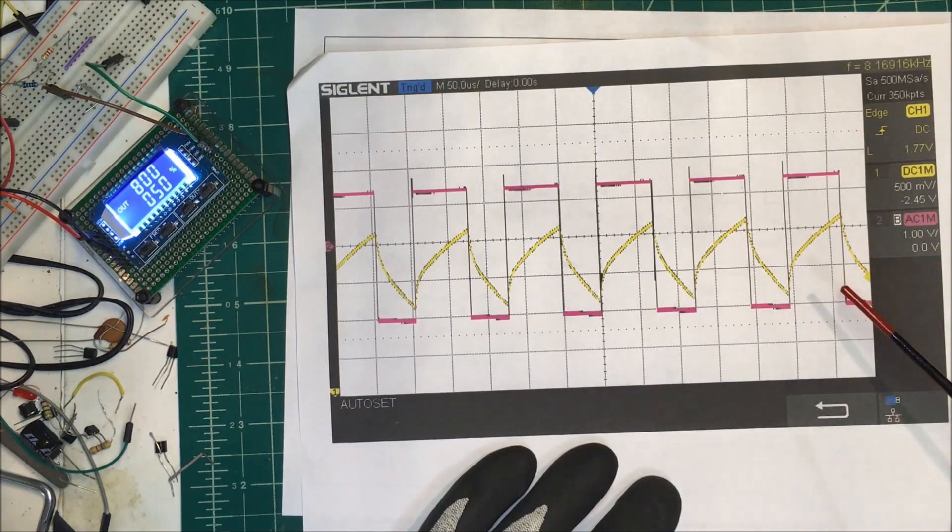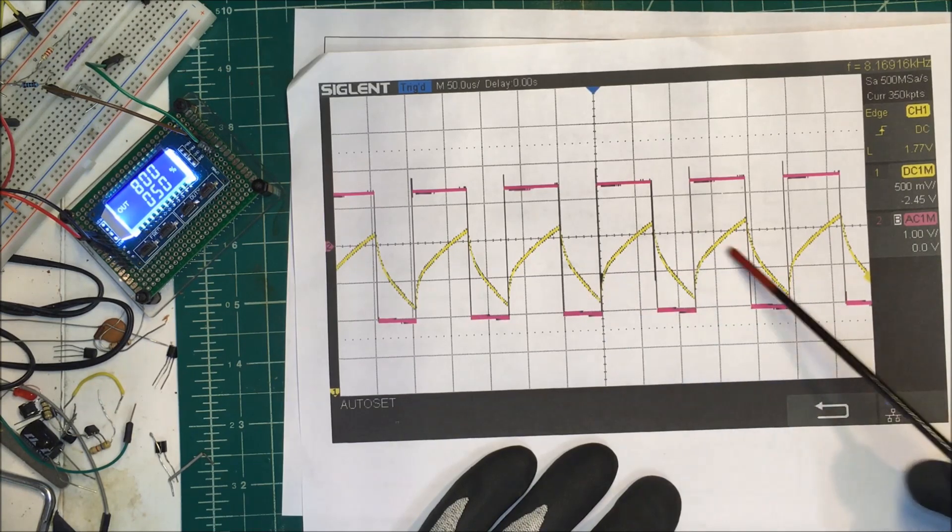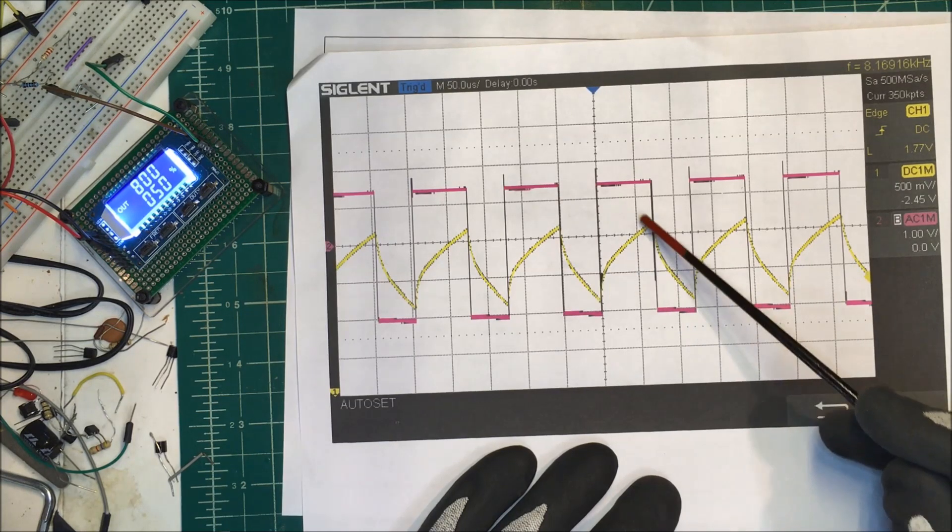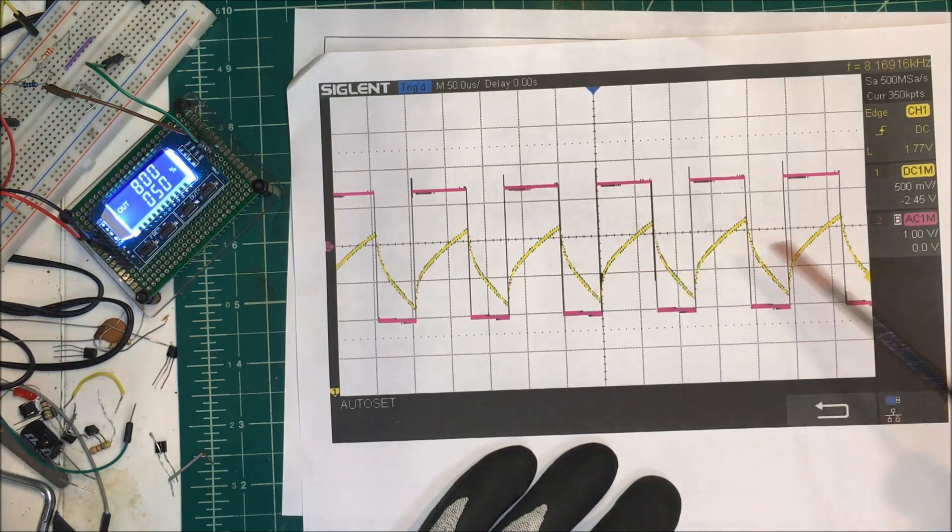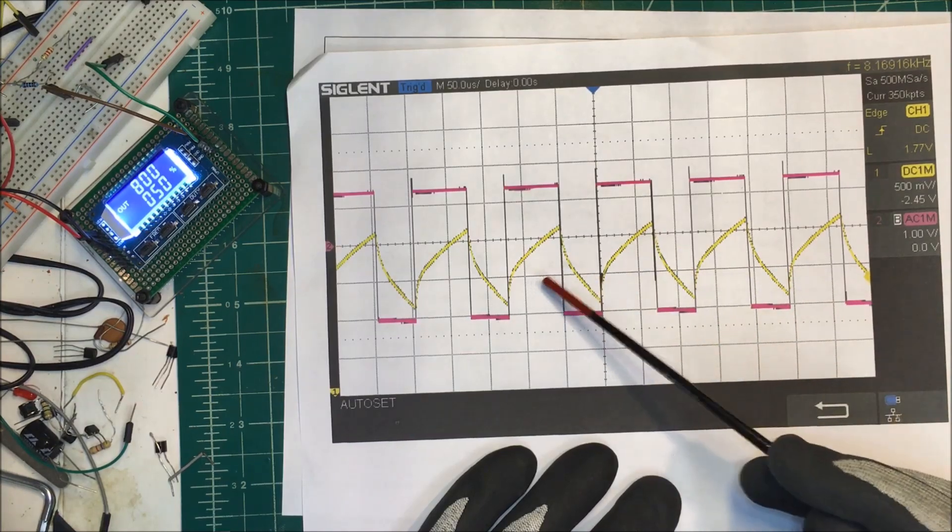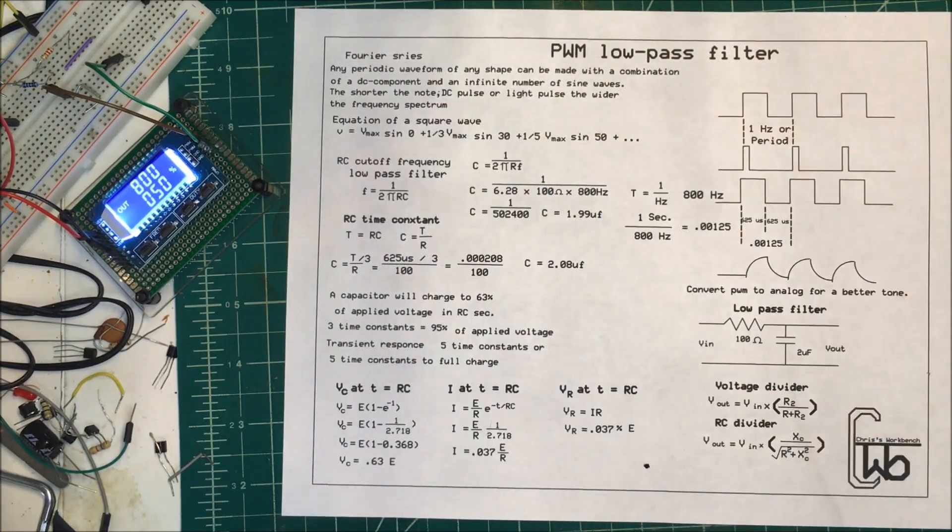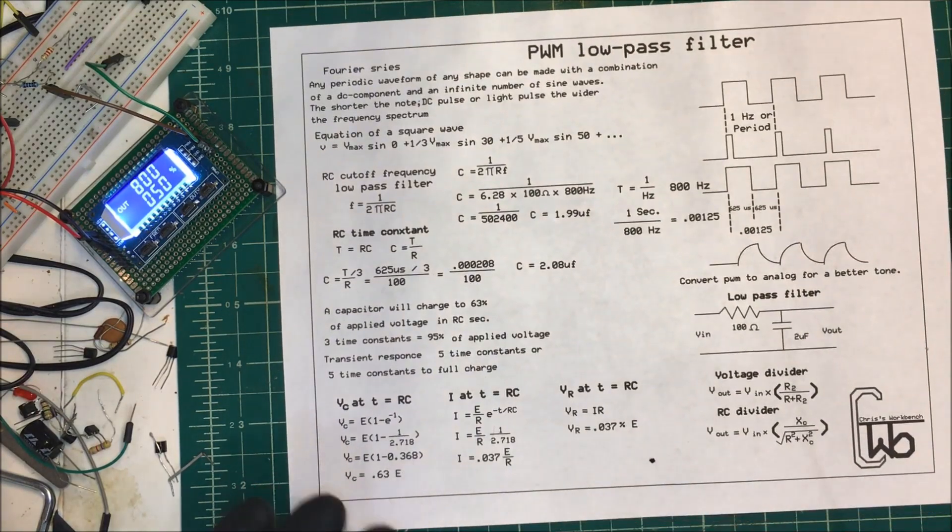If I added a couple more filters on here, I could get it to look more like a sine wave. The voltage is actually reduced by quite a bit with our RC filter here. I'm going to switch over and we'll see what this thing sounds like.